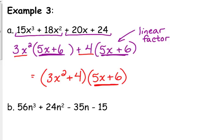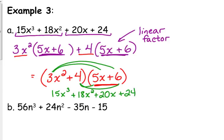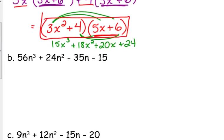And again, we can check it really quick. We can foil it. 3x squared times 5x. 3 times 5 is 15. X squared times x is x cubed. The outside, 3 times 6 is 18, x squared. The inside, 4 times 5 is 20, and that one has an x. And the last, 4 times 6 is 24. That's our original problem. So we're good. This is our answer right there.